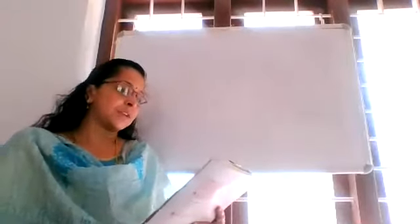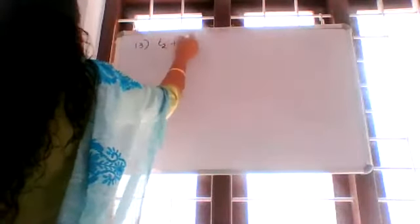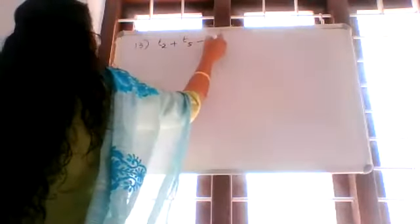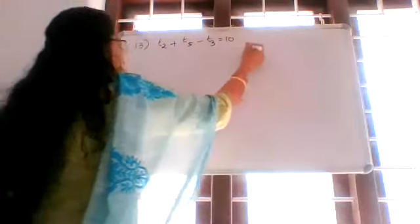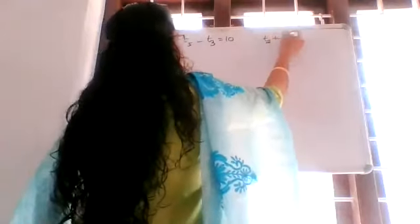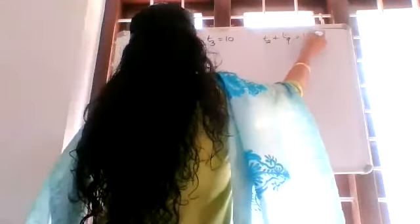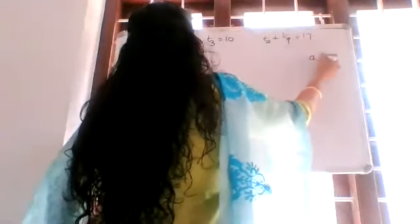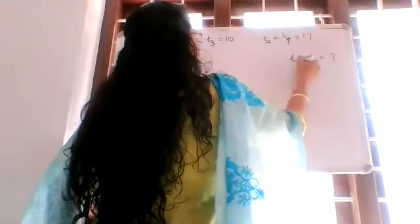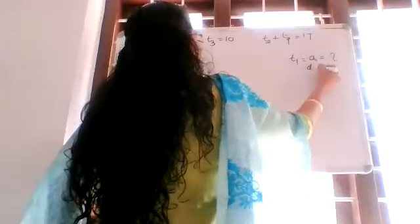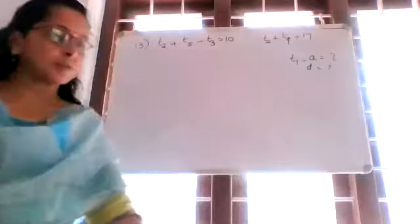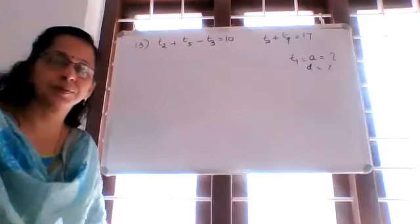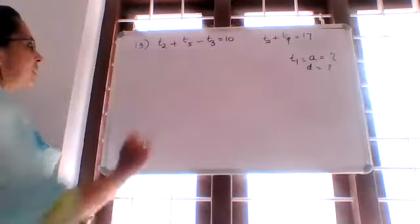Question 13: If TN represents the nth term of an AP, and T2 plus T5 minus T3 is equal to 10, and T2 plus T9 is equal to 17, find its first term and common difference. This is similar to question number 12.